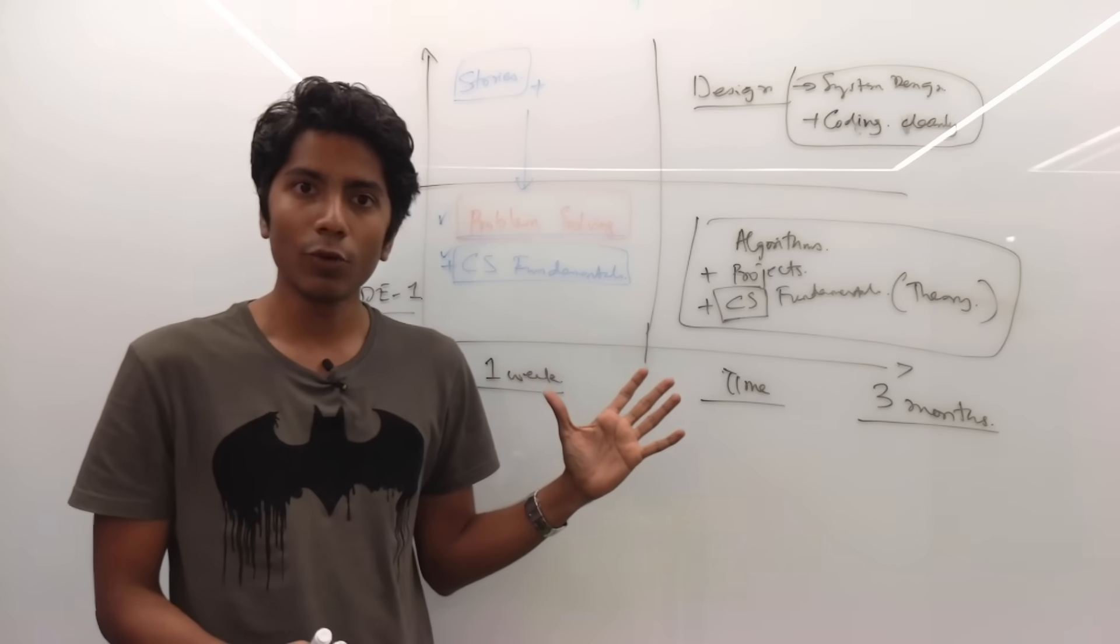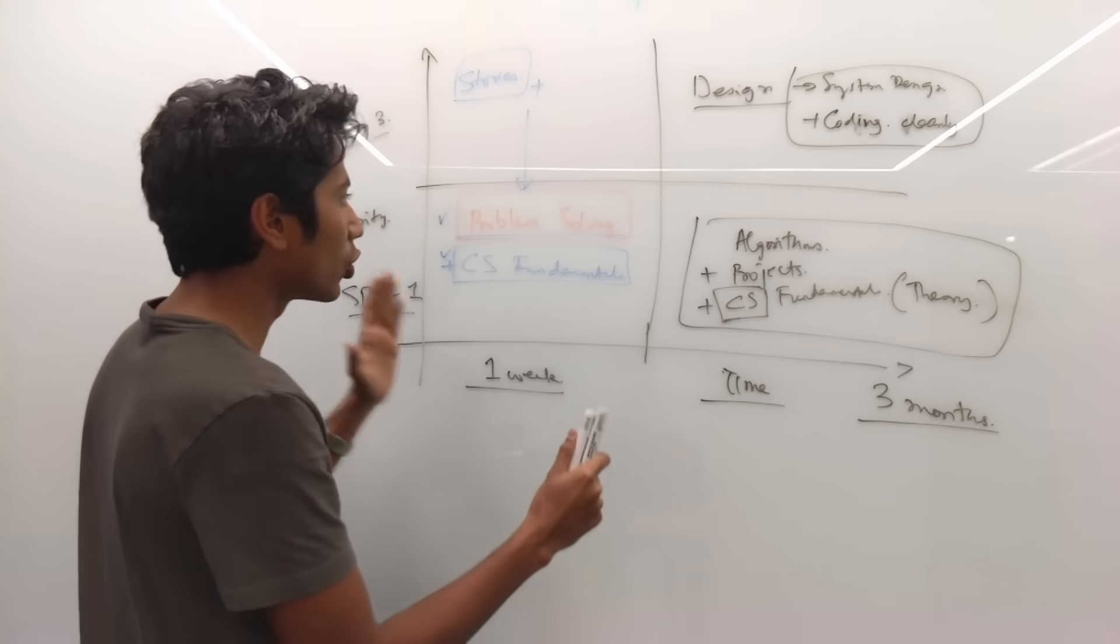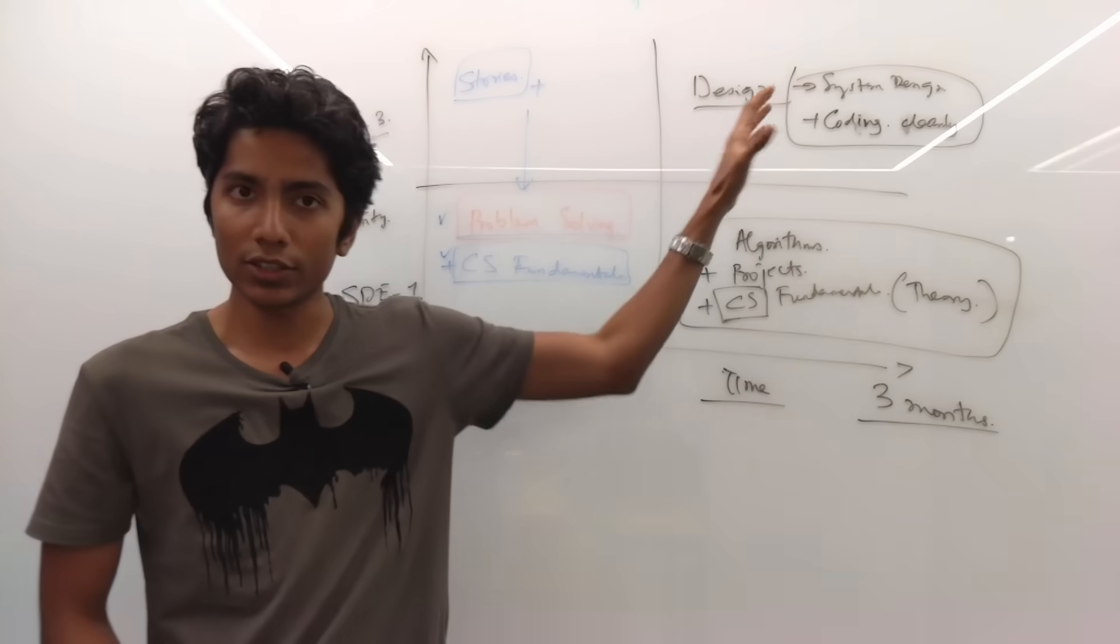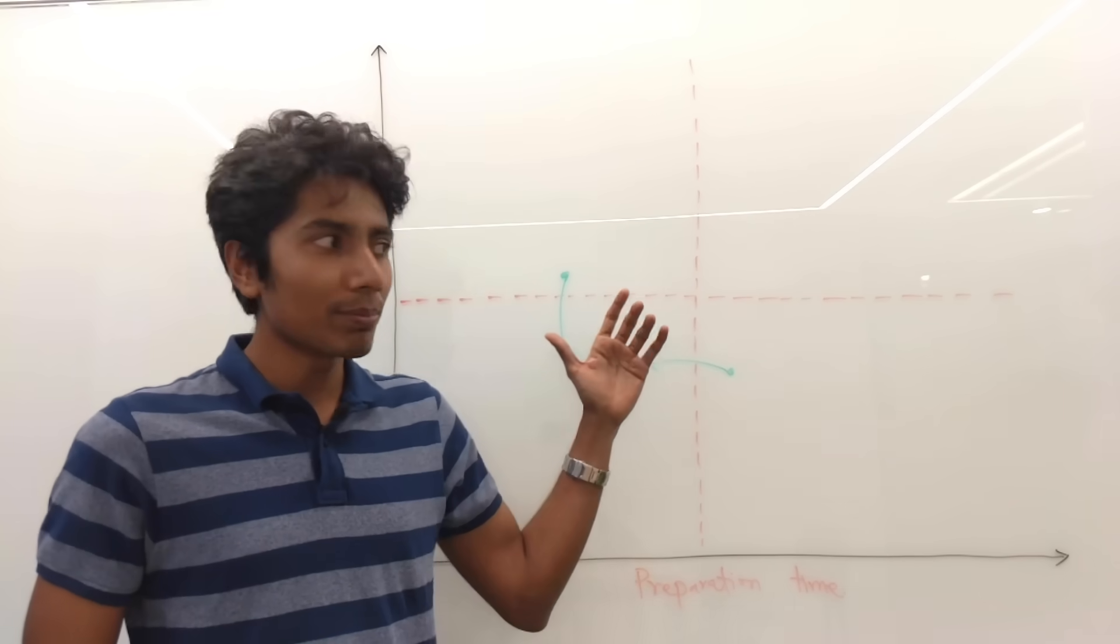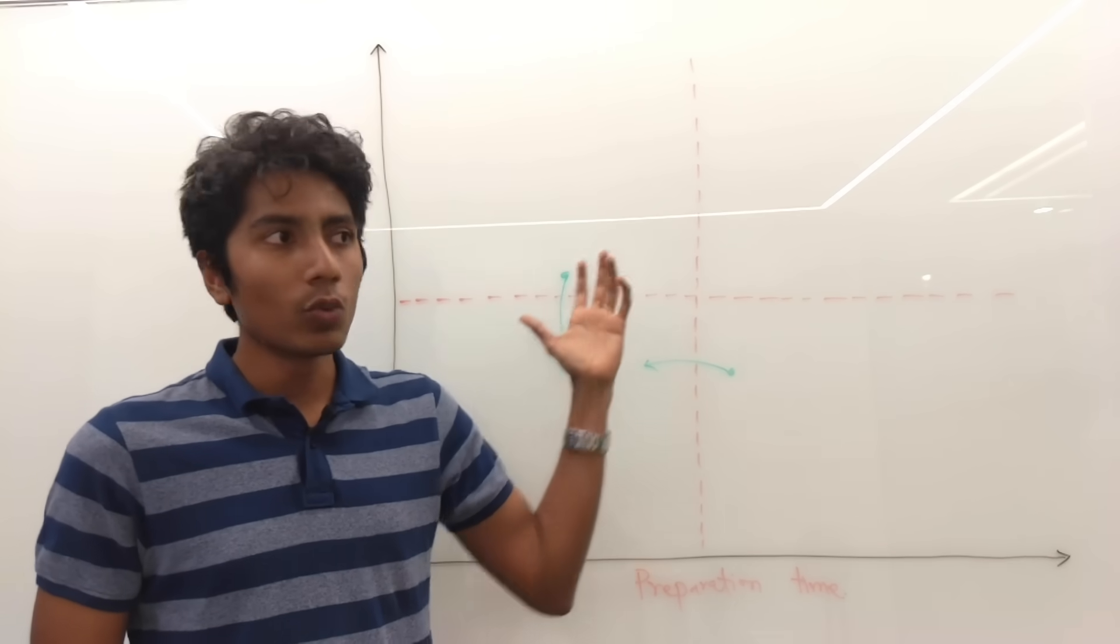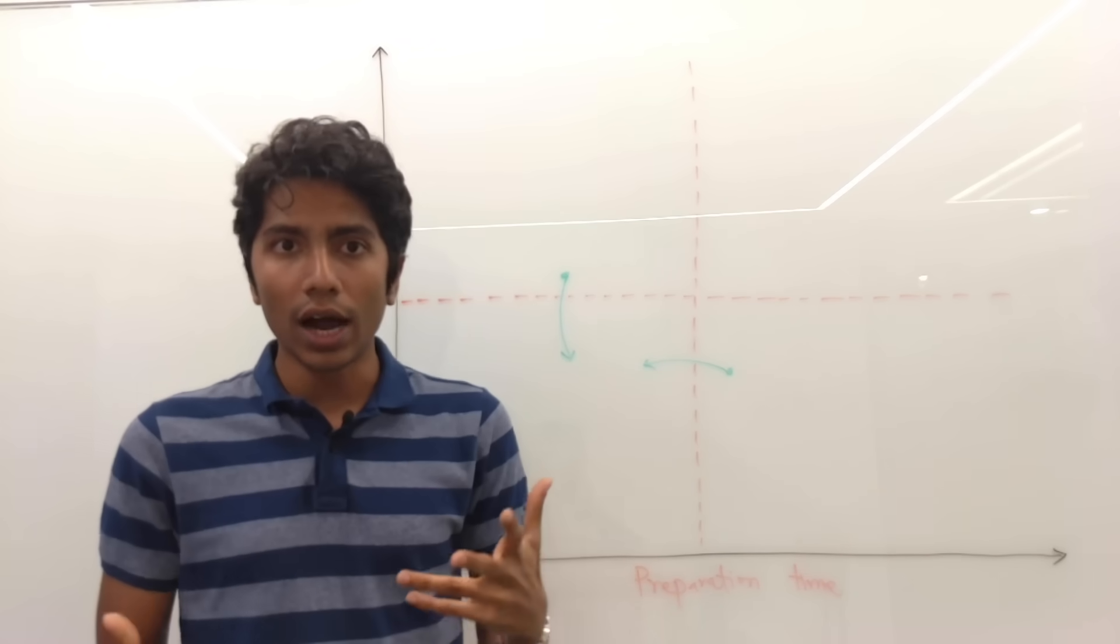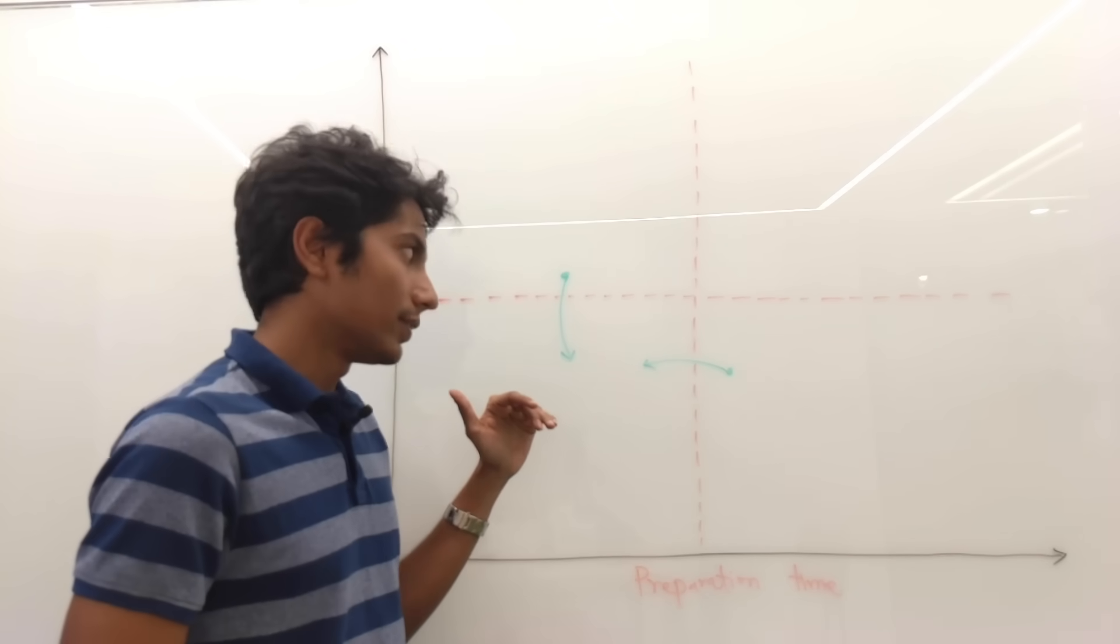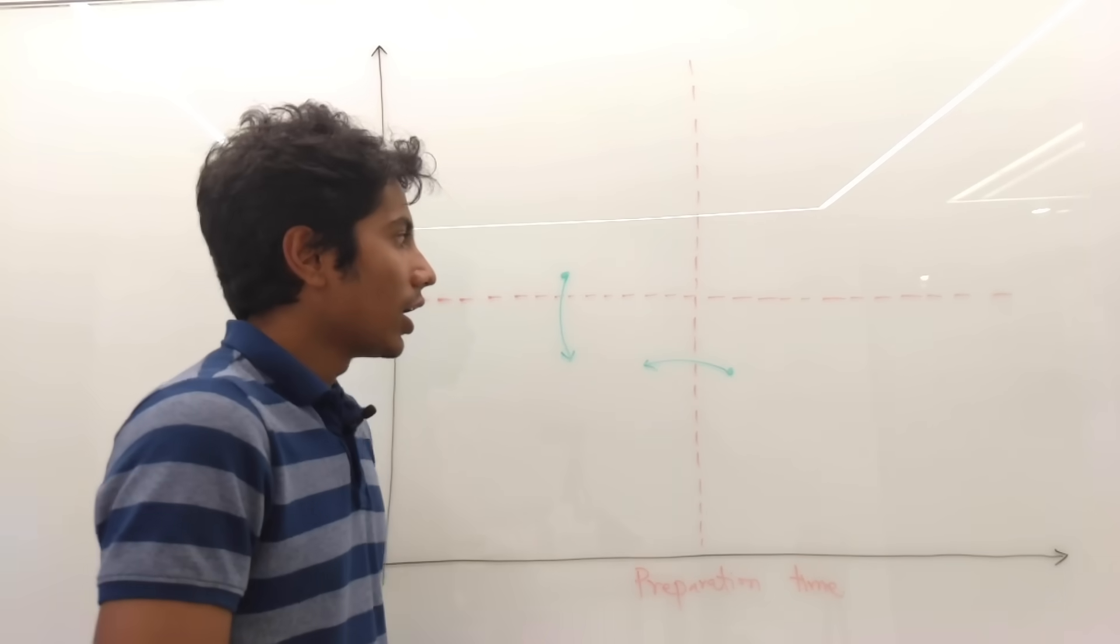So now that we have these four key quadrants defined, let's try to think about some good resources for each of these quadrants. One quick disclaimer here is that if you're coming from something which is not core computer science, maybe from an electronics background, or if you have been working and you want to switch to a technical role, then of course you need to work harder on your fundamentals. And that is something we have to take for granted.